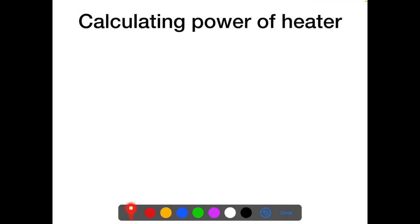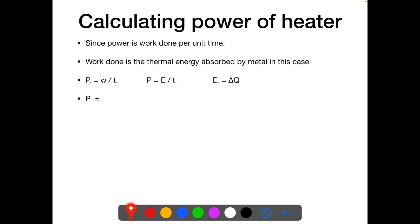Now let's calculate the power of heater. Since power is the work done per unit time, the defining equation for power is work done per unit time. Here the work done is considered as the thermal energy provided by the heater, or the thermal energy absorbed by the metal.